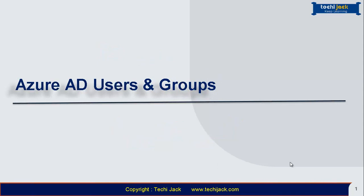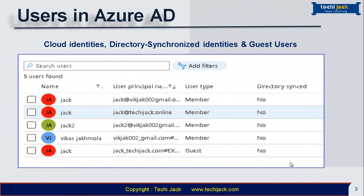Hello friends and welcome to Techie Jack. In this video we are going to see about Azure AD users and groups. Let's get started. Typically there are three types of users in Azure AD: cloud identities, directory synchronized identities, and guest users.